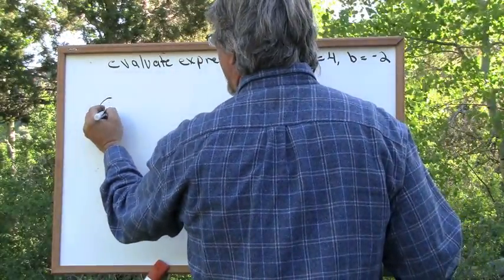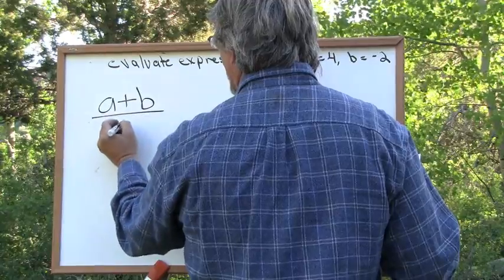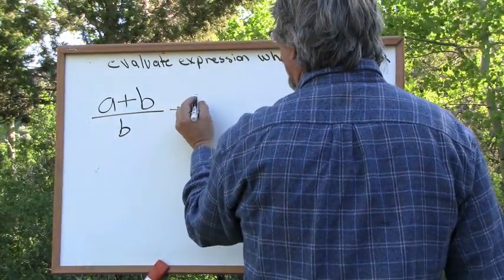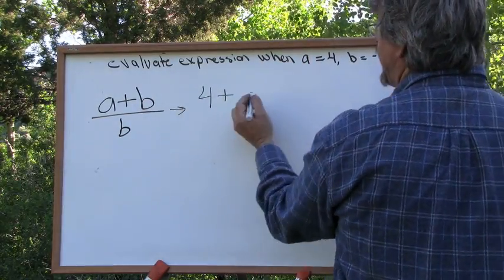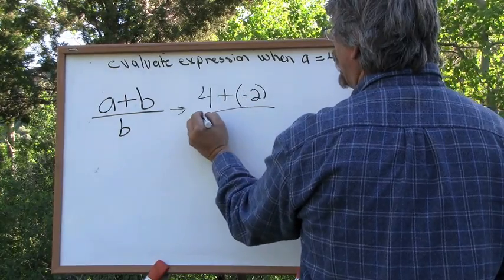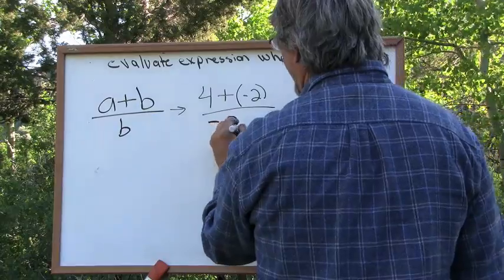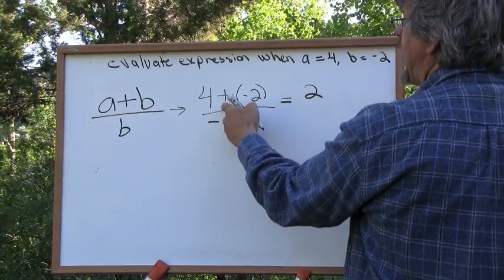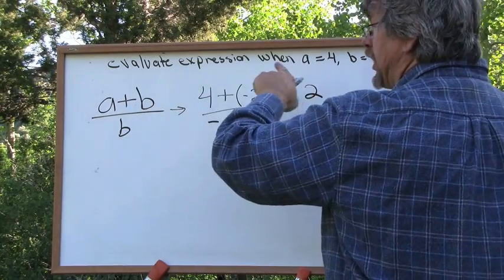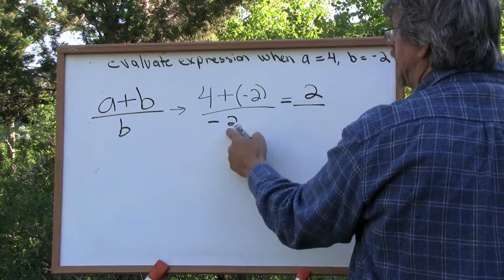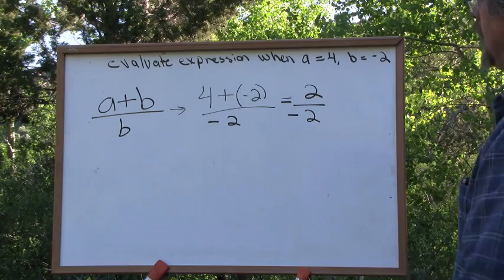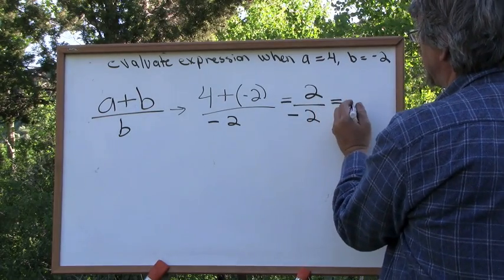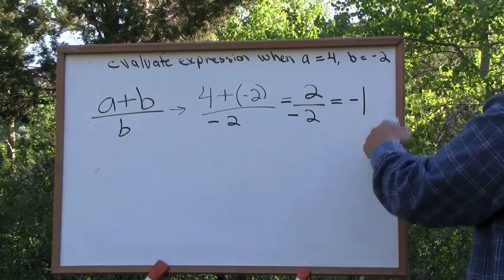What if we have the expression A plus B over B? We're in a fraction. A is valued at 4, so this becomes 4 plus negative 2 over B, which is negative 2. You do the top part of the fraction first: 4 plus negative 2 is 2, because we start at 4 and go down 2 units. So this becomes 2 over negative 2. In a division we have an odd number of negatives, therefore that's going to equal negative 1. A number divided by itself is always 1.